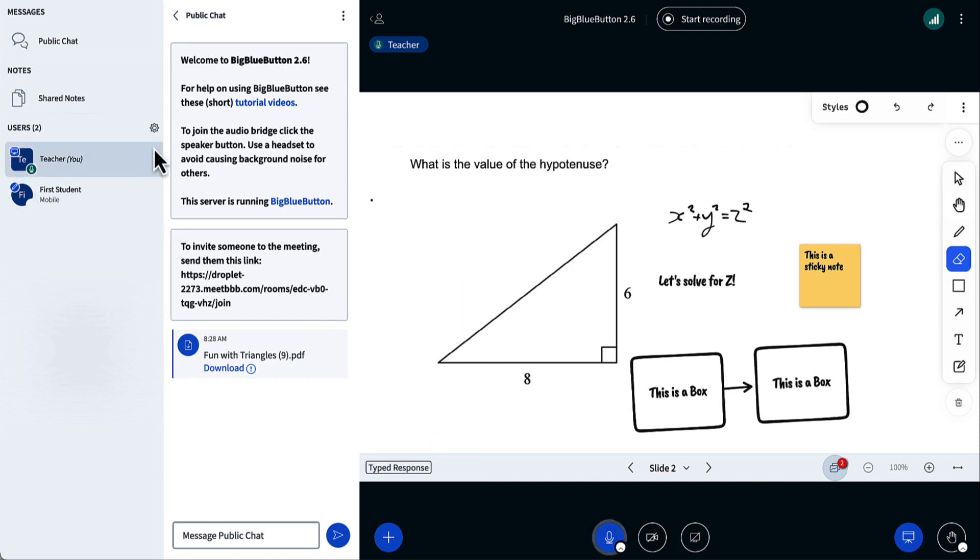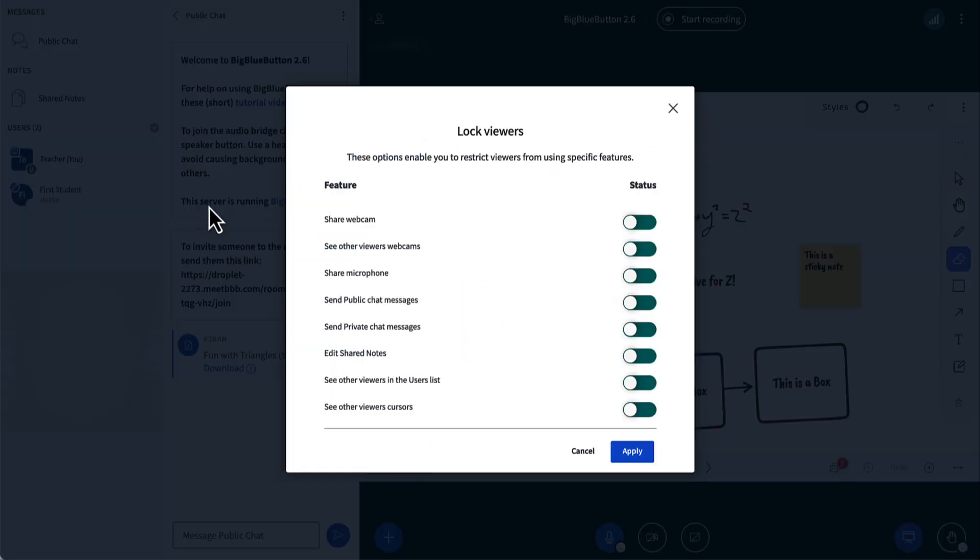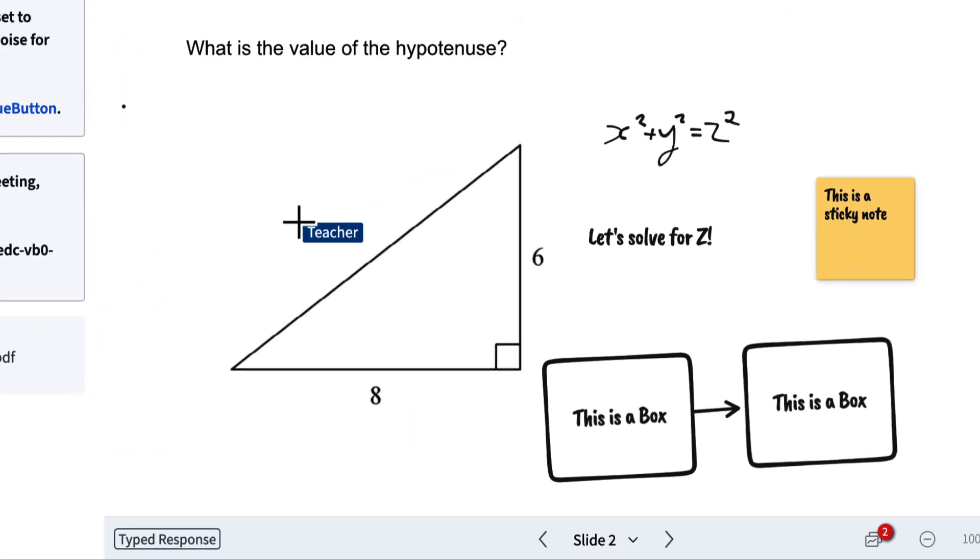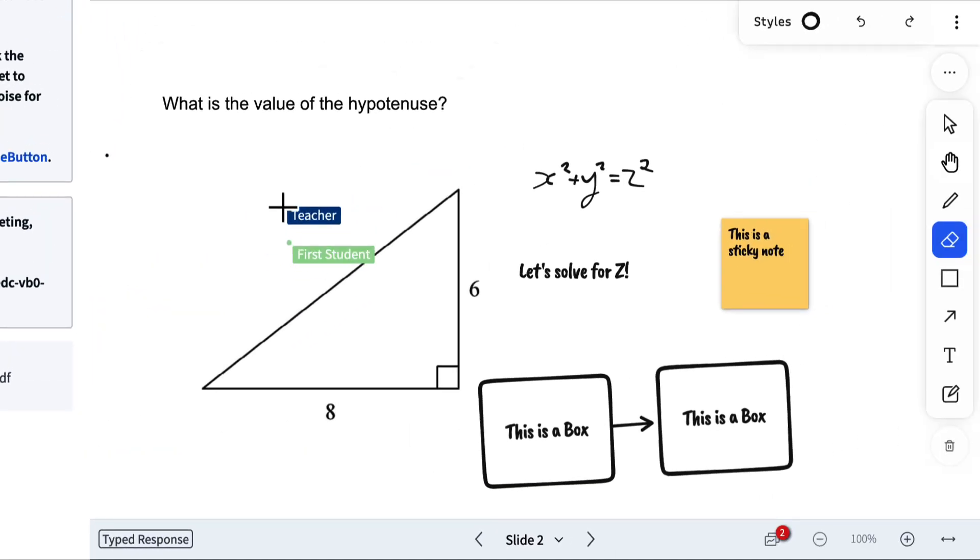You can even have them do visual assessment. If I go to the lock settings and turn off the ability for students to see other cursors and apply, then you can start asking them to point at items on the screen, and students can't see each other. A really cool way to do visual assessment.